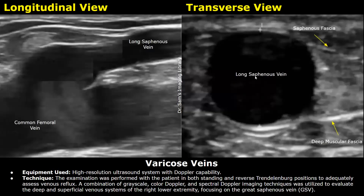Equipment used: high-resolution ultrasound system with Doppler capability. Technique: the examination was performed with the patient in both standing and reverse Trendelenburg positions to adequately assess venous reflux. A combination of gray scale, color Doppler, and spectral Doppler imaging techniques was utilized to evaluate the deep and superficial venous systems of the right lower extremity.